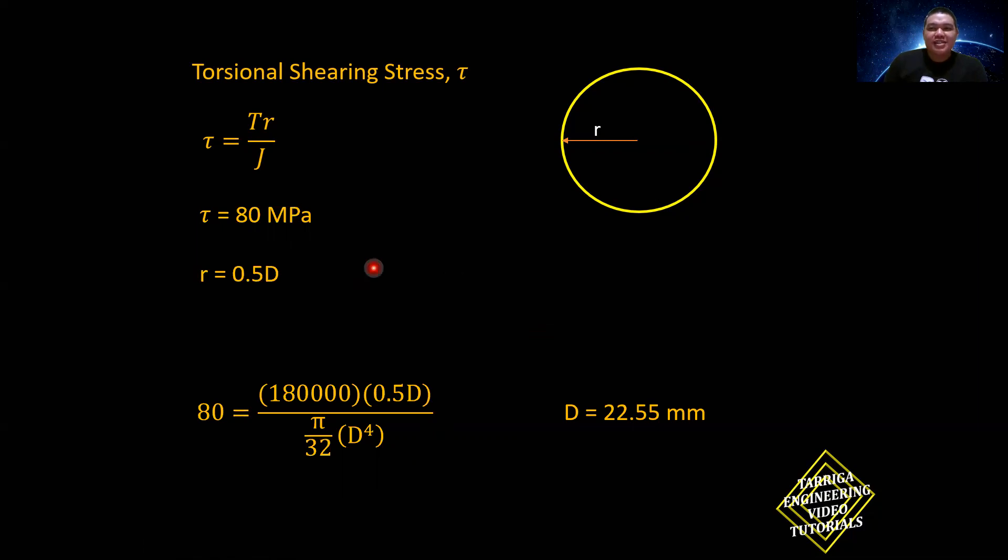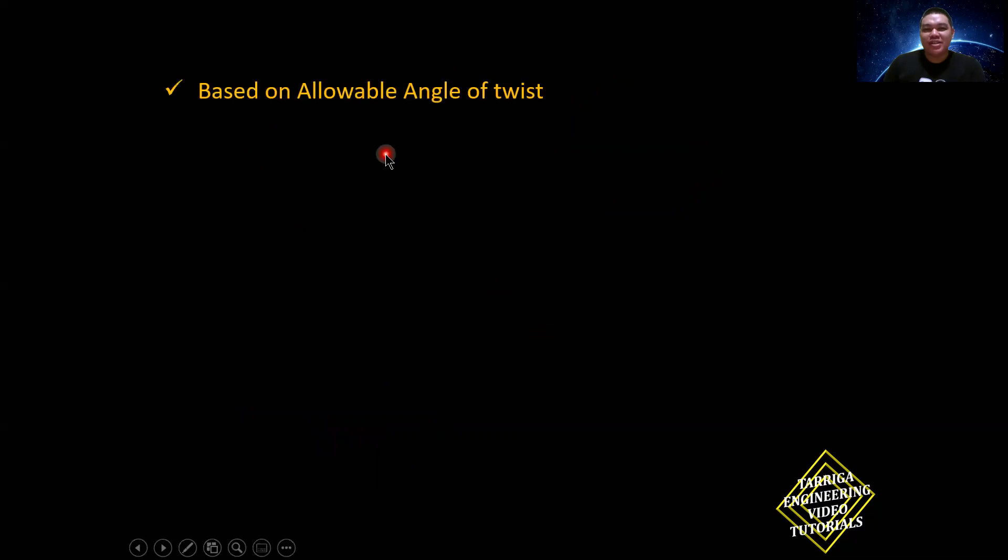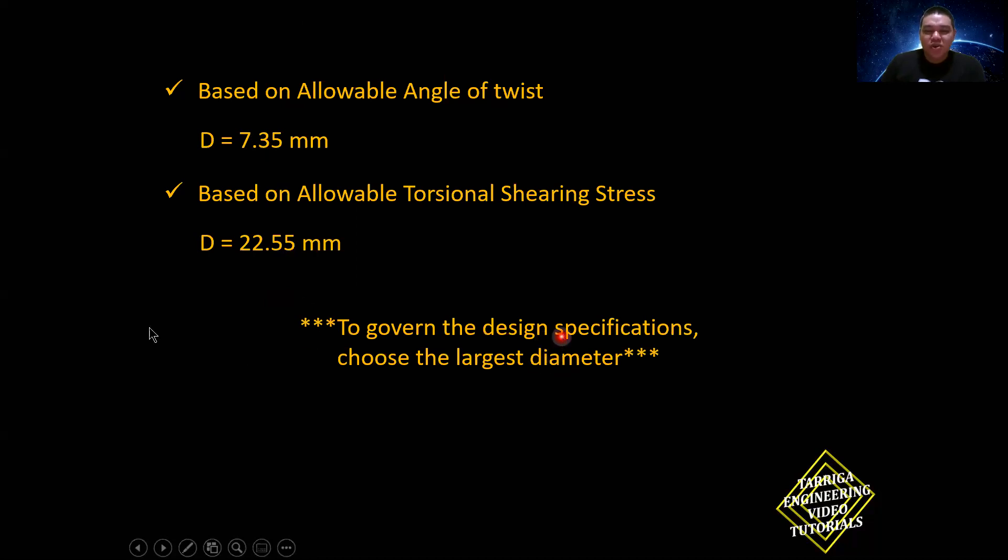But we got two diameters. Based on allowable angle of twist, diameter is 7.35. Based on allowable torsional shearing stress, that is 22.55 mm. Which of the two will we use? Now, to govern the design specification, always choose the largest diameter. You may check that one in the previous formulas. And by that, diameter is 22.55 mm. And that would be the answer.